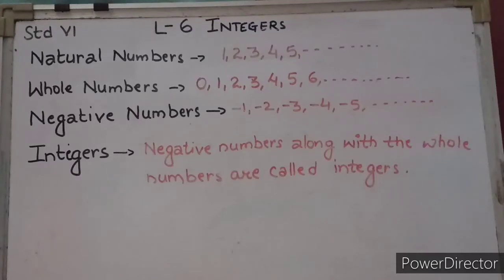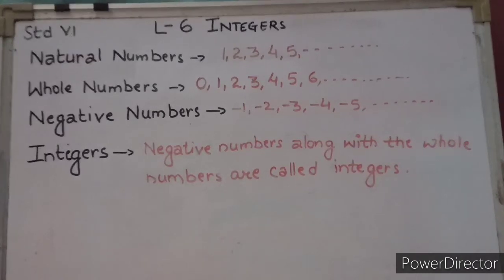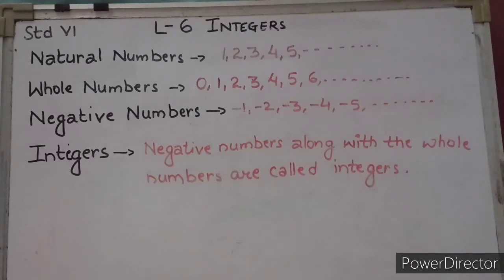Hello students, welcome back to our online classes. In this video we are going to solve lesson number six, that is integers. In integers we are going to discuss negative numbers, representation of numbers on number line, ordering of integers, then addition of integers on a number line and without a number line, subtraction of integers on a number line and without a number line.